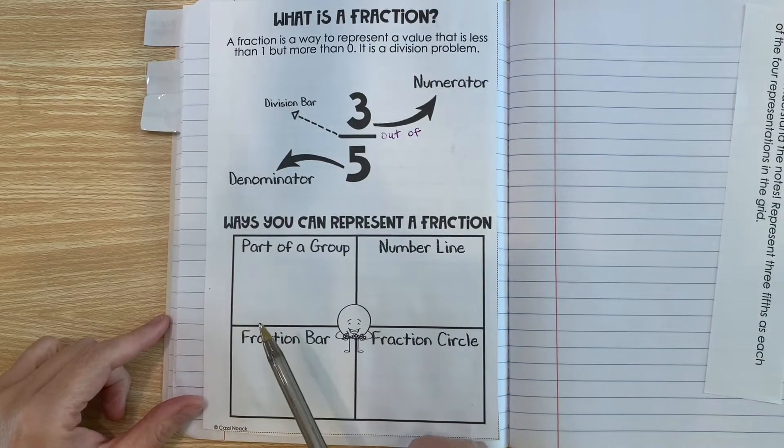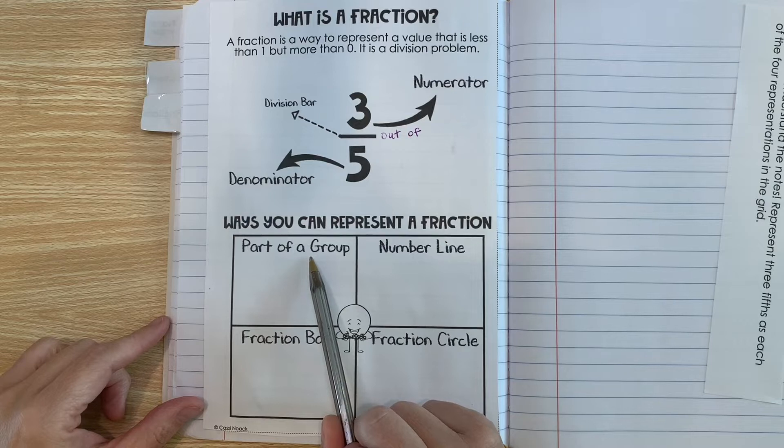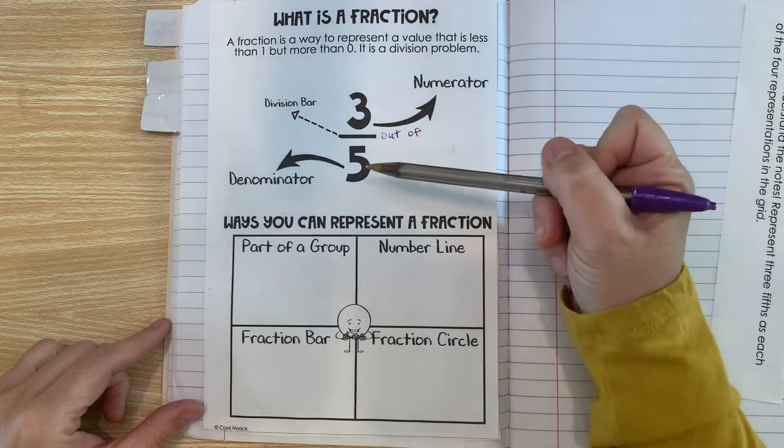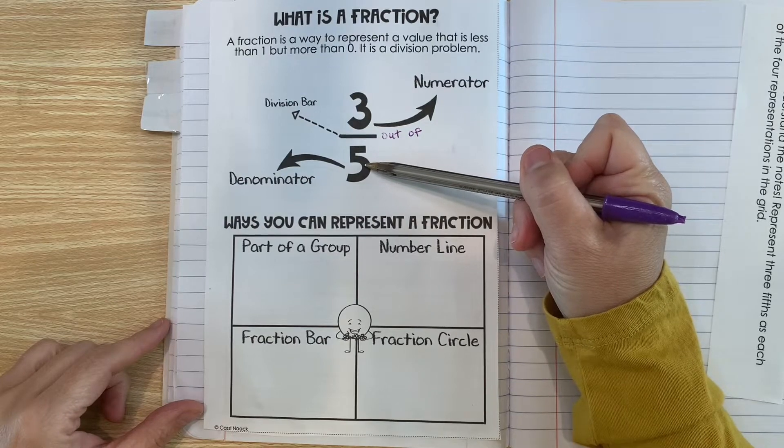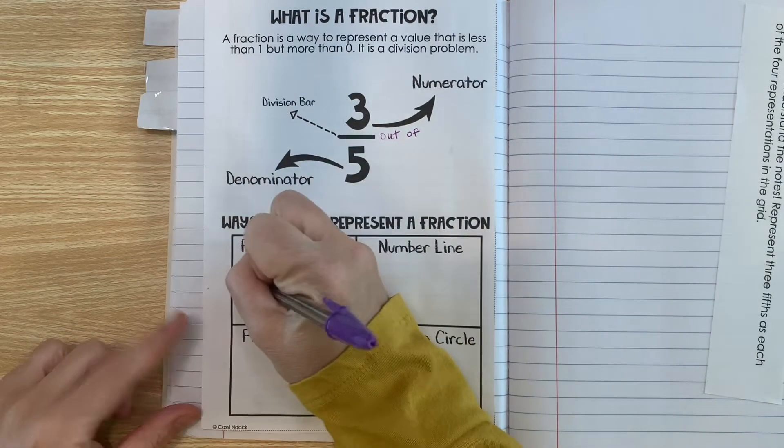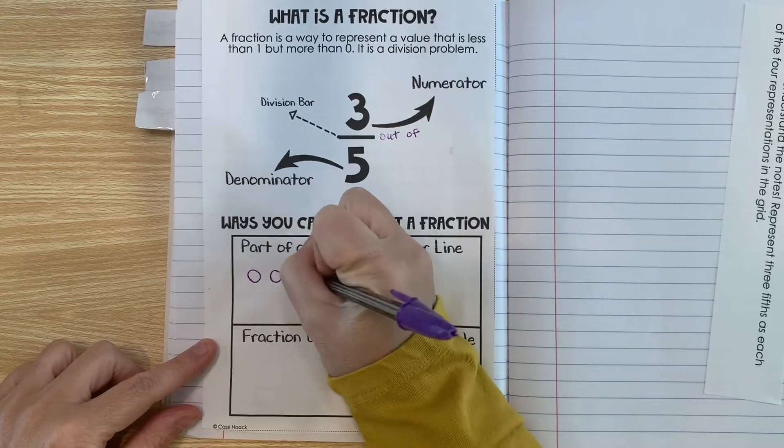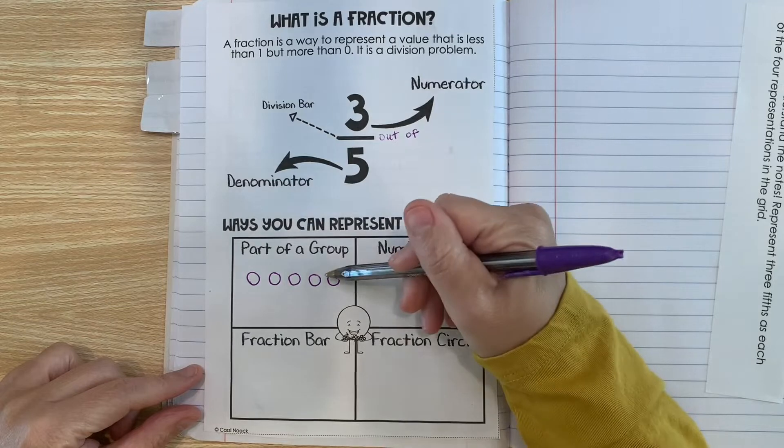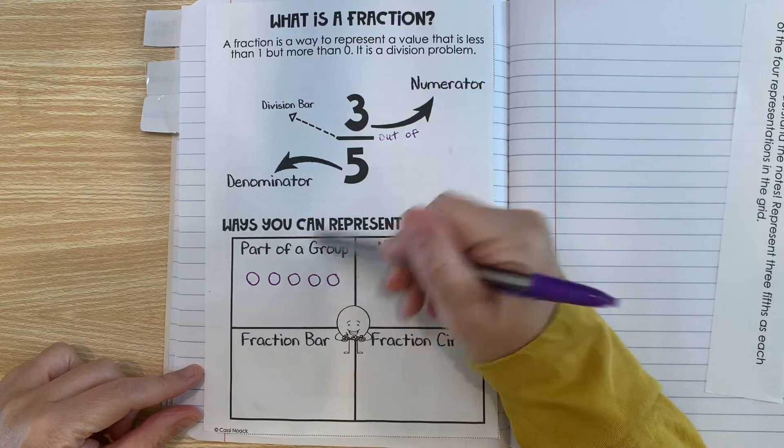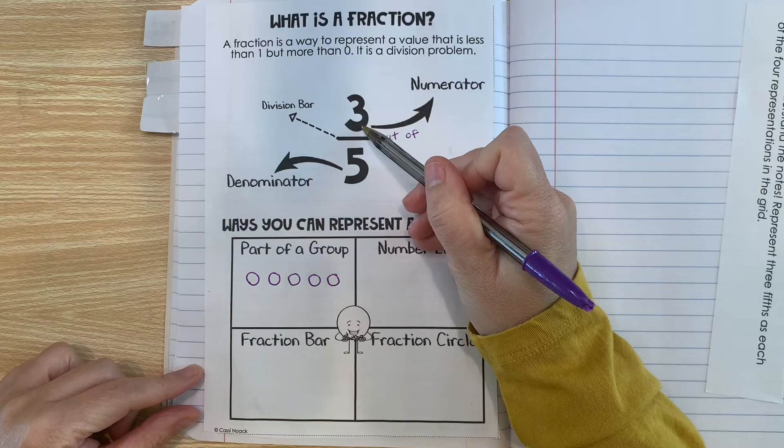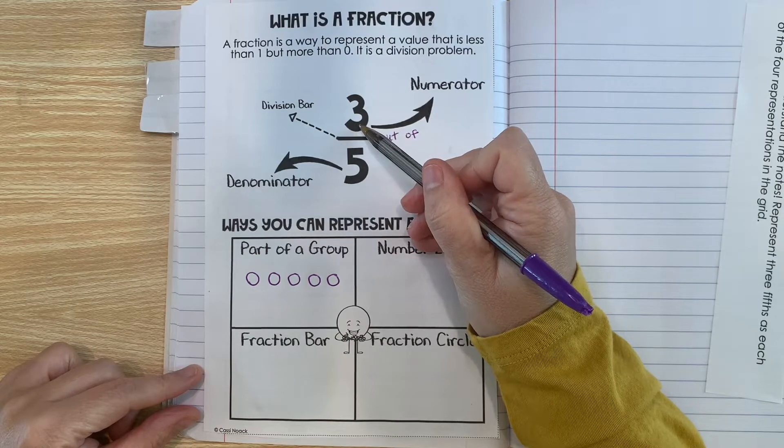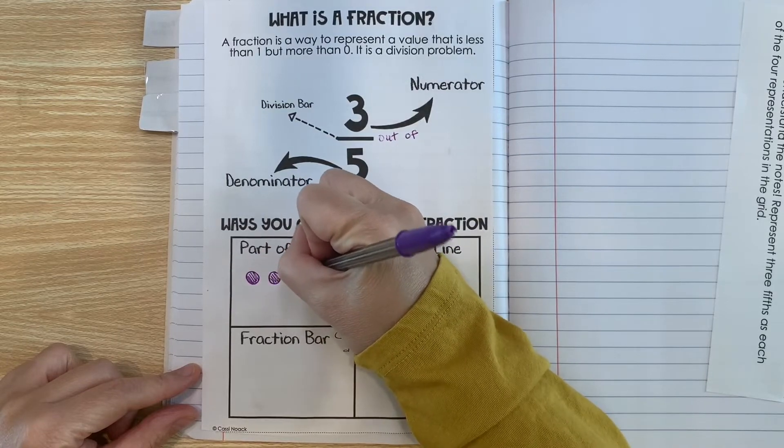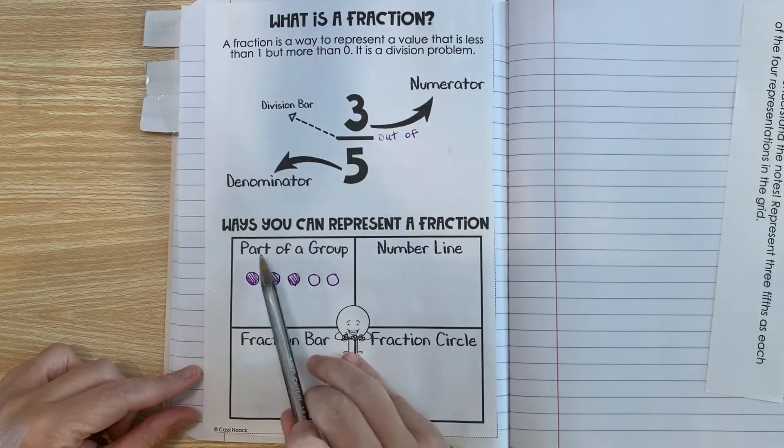So one way you can represent a fraction is a part of a group. So in this representation, we would have to have five things in the whole group. So I'm just going to start by drawing five circles. So this group is made out of five circles. So one whole group has five circles. Now the numerator tells us how many of those to shade. So we're going to shade three out of the five. And now we have represented three fifths as a part of a group.